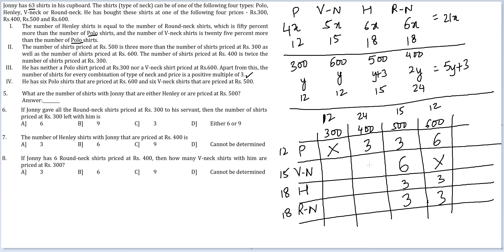Six V-neck shirts are priced at 500. With that known, the 500 column has 3, 6 so far, meaning the remaining cells in that column are 3 and 3 — those are now determined. For V-neck at 400, it will be either 6 or 3, which we'll resolve later. This is the guaranteed information we have.